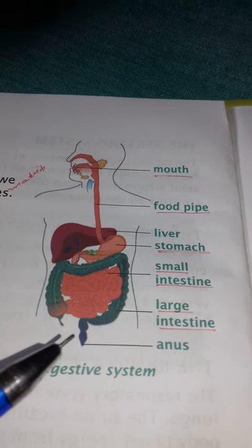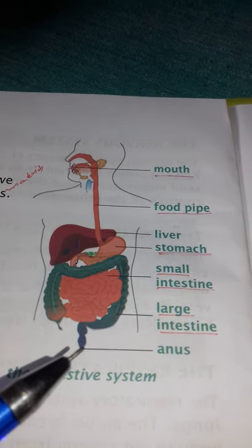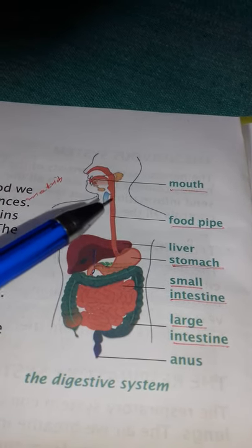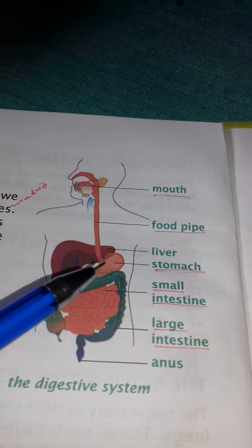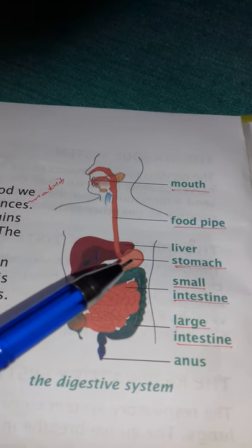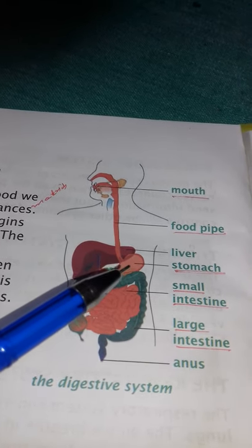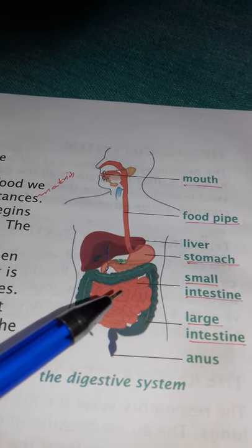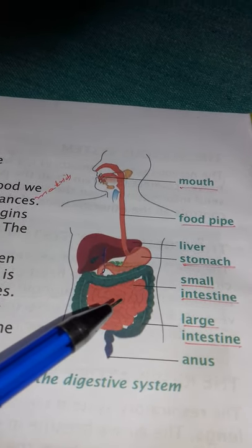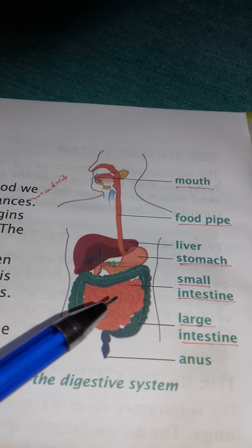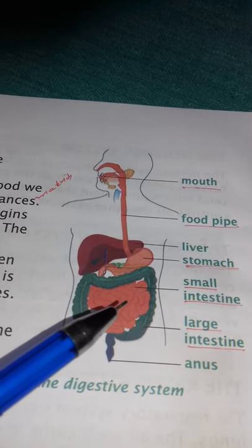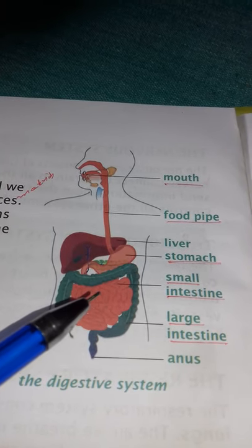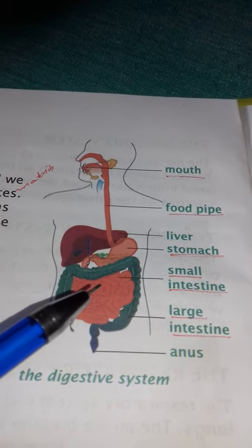So to recap: we chew the food, then it comes through the food pipe to the stomach, where it is not completely digested. The undigested food then comes to the small intestine, where the food is fully broken down into simple substances — they are fully digested. But remember, some parts of the food remain undigested.